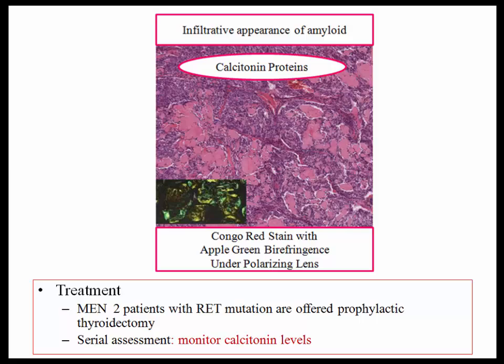The infiltrative appearance of amyloid is important: in the kidney it is infiltrative, especially in the mesangium, causing proteinuria; in the heart it is infiltrative, causing restrictive heart disease; and so it goes in the thyroid with an infiltrative appearance. They might describe a patient with pheochromocytoma and ask you to choose the next step in management — one answer might be prophylactic thyroidectomy, backing you into an MEN syndrome. These tumors elaborate calcitonin, so calcitonin levels are monitored in the patient with medullary thyroid carcinoma.